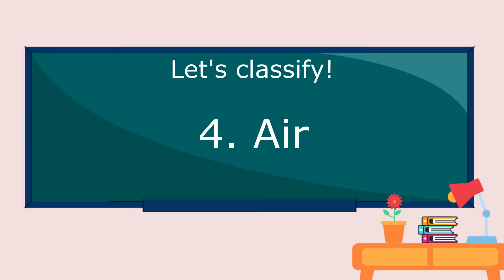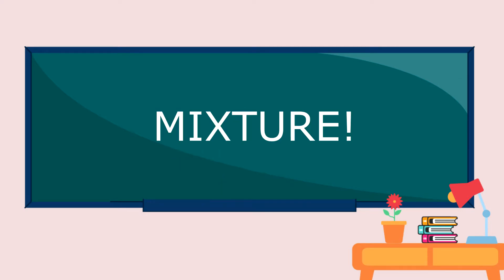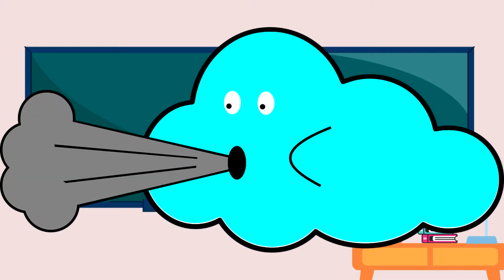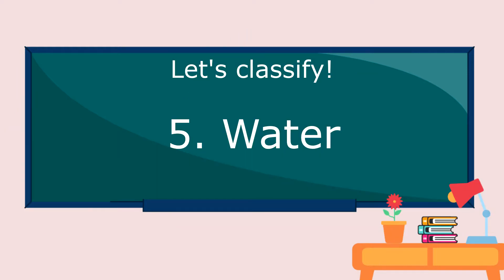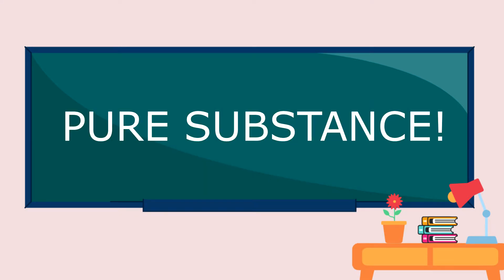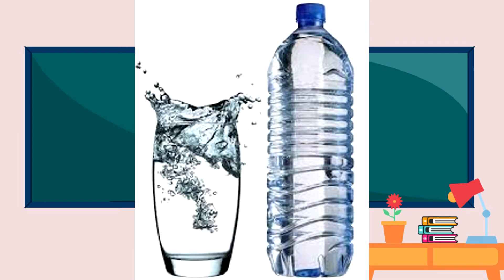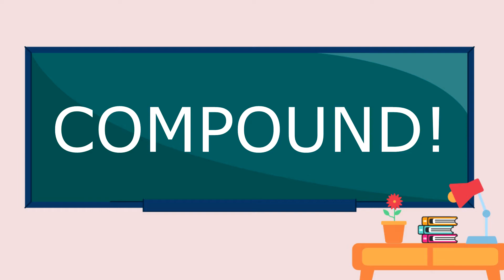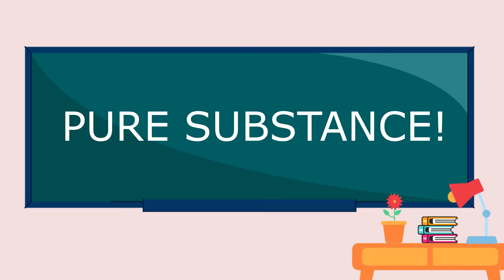Next is air. Air is a mixture, because air is composed of a mixture of several gases. Water — water is a pure substance, because water is composed of two elements, hydrogen and oxygen, making it a compound. And a compound is a pure substance. Can you distinguish now a pure substance from a mixture?